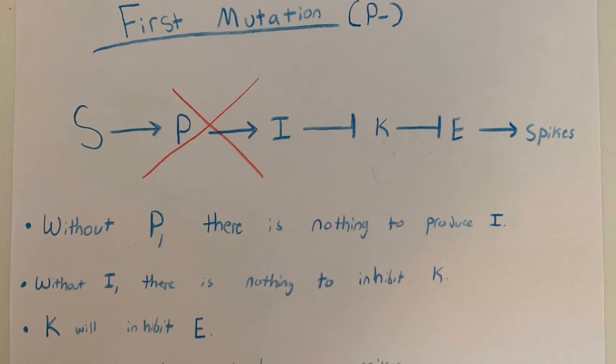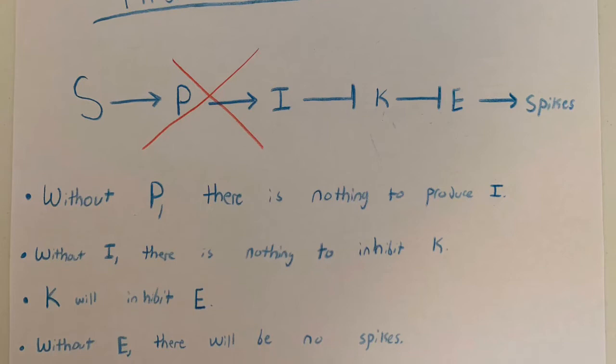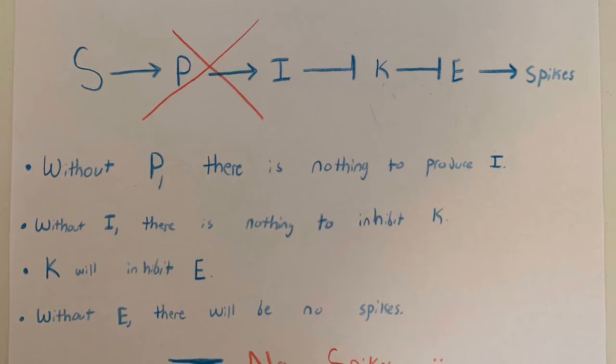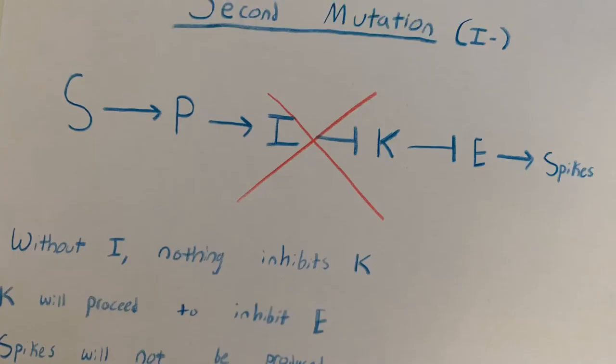The first mutation is the P- mutation. Without P, there is no protein to produce I. Without I, there's nothing to inhibit K. And K will inhibit E, which means spikes will not be formed.